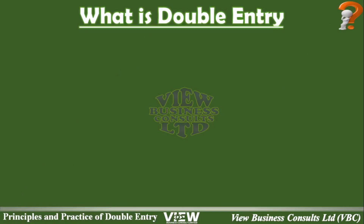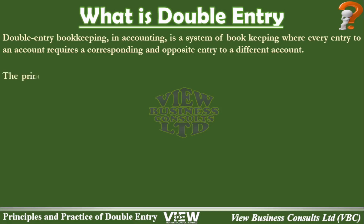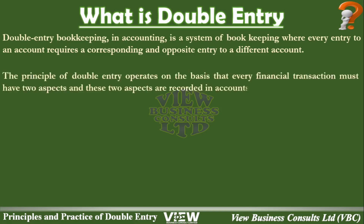Let's begin by defining what double entry is. Double entry bookkeeping in accounting is a system of bookkeeping where every entry to an account requires a corresponding and opposite entry to a different account. What this means is that for there to be a transaction there are two parties — somebody giving money and somebody receiving money — and these two are recorded in two separate accounts. The principles of double entry operate on the basis that every financial transaction must have two aspects, and these aspects are recorded in accounts.